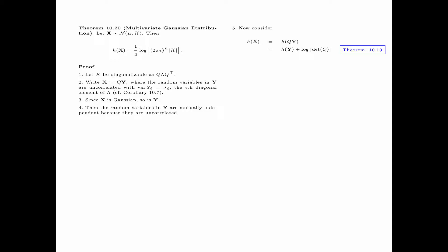Now consider entropy of x equals entropy of Q times y. By the scaling property, the entropy of Q times y equals the entropy of y plus log of the absolute value of the determinant of Q. We have seen earlier in this chapter that the determinant of Q is equal to plus or minus 1, and hence log of the absolute value of the determinant of Q equals log 1, which equals 0. Since the random variables in y are mutually independent, the entropy of y equals the summation of entropy of y_i, for i equals 1 up to n.